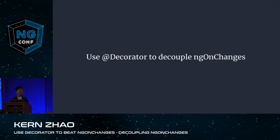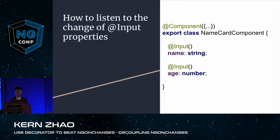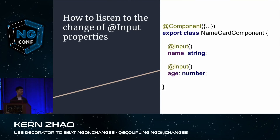My talk today is about how to use Decorator to decouple ngOnChanges. Suppose we have a name card component with two input properties: name and age. My question is, how do you listen to the change of input properties? For example, if I want to console log 'name changed' whenever name is changed, or console log 'age changed' every time age gets changed.